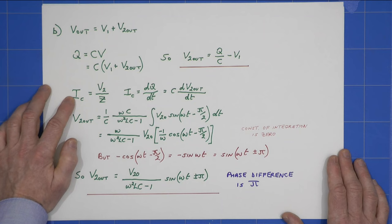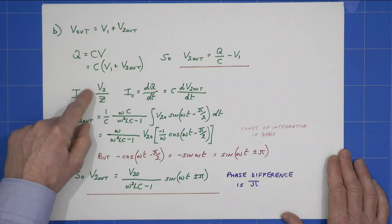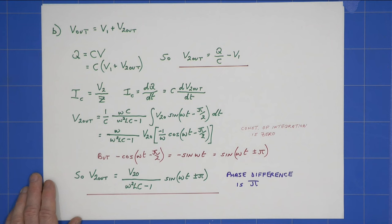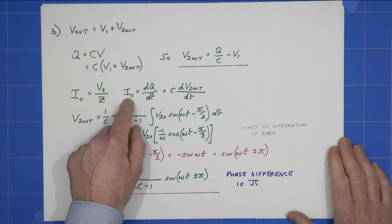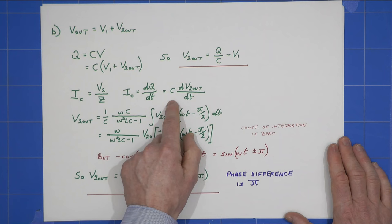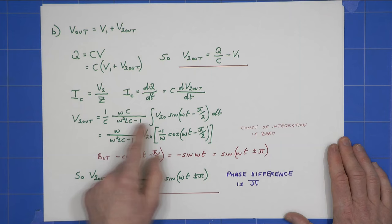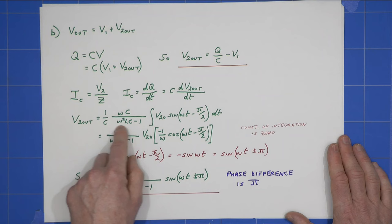The current through the capacitor will be V2 divided by the impedance, that's the total impedance. And also, we know that the current is defined as dQ by dt at the capacitor, so it must be this expression here. Well, if I rearrange this and feed in the substituting values, I can get an expression for V2out, which is this here.